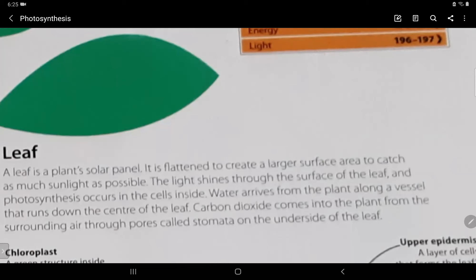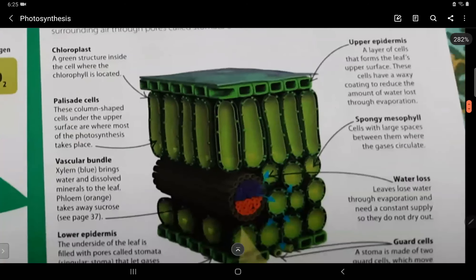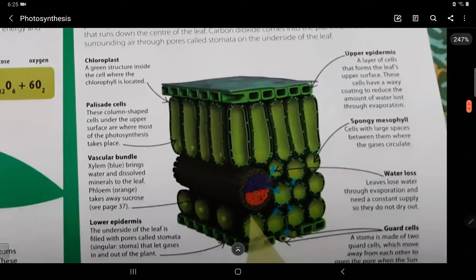So yes, stomata were the pores we learned about in the video about plant tissues. Now, this is a diagram of our leaves. As you can see, these are the chloroplasts. These are the palisade cells which means the column shaped cells under the upper surface are where most of the photosynthesis takes place. Vascular bundles as we learned through xylem and phloem, lower epidermis, upper epidermis, spongy mesophyll, water loss and guard cells.